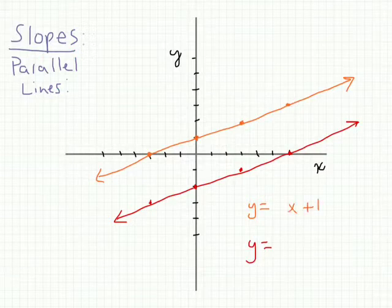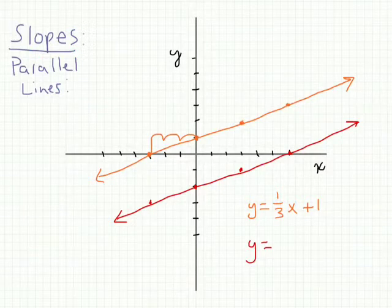The slope moves up 1 across 3. Up 1 across 3 again — so you can see that's the slope for our orange line.